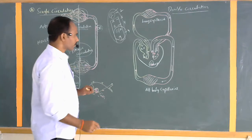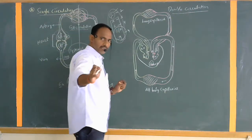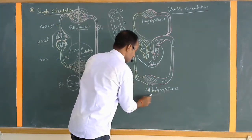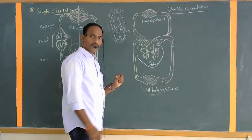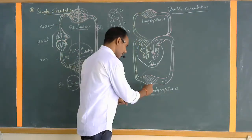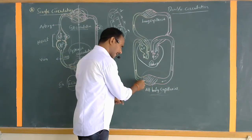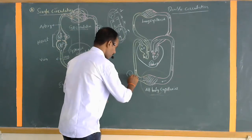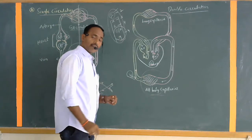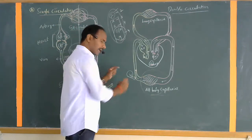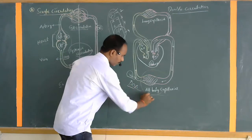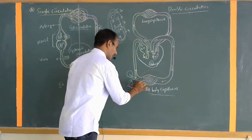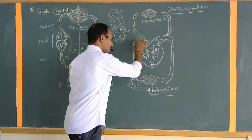Starting from the body parts for convenience: all body parts contain blood capillaries, which connect to the main vein. All veins contain deoxygenated blood. The veins collect deoxygenated blood from the body parts through blood capillaries, and that deoxygenated blood directly opens into the right atrium.